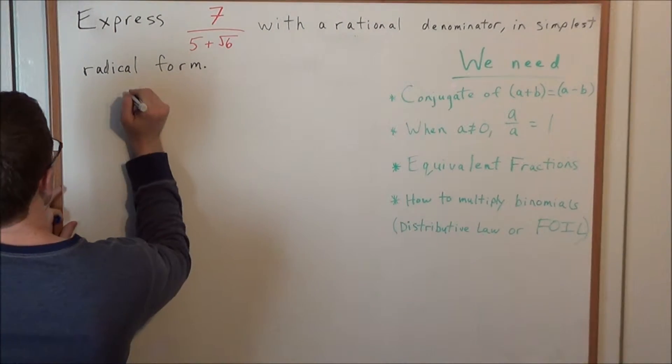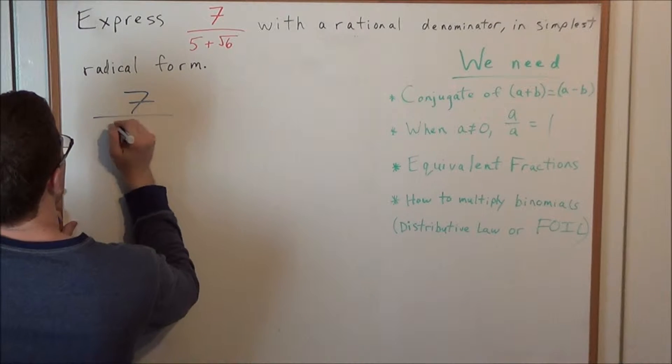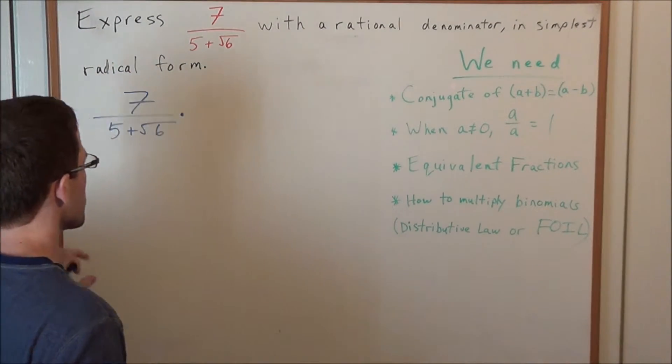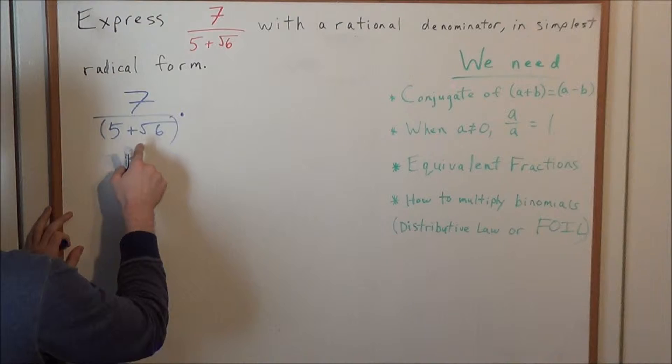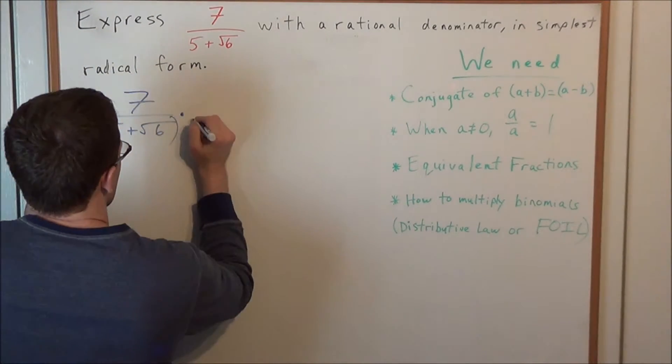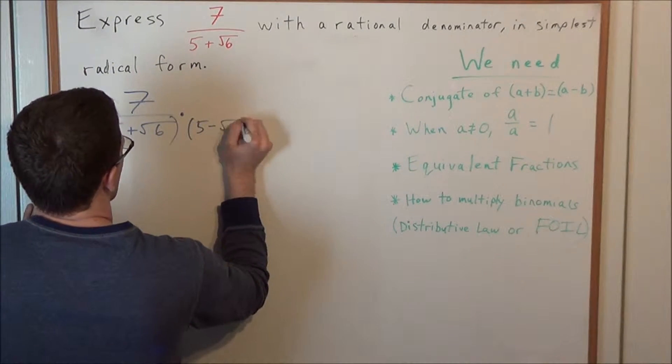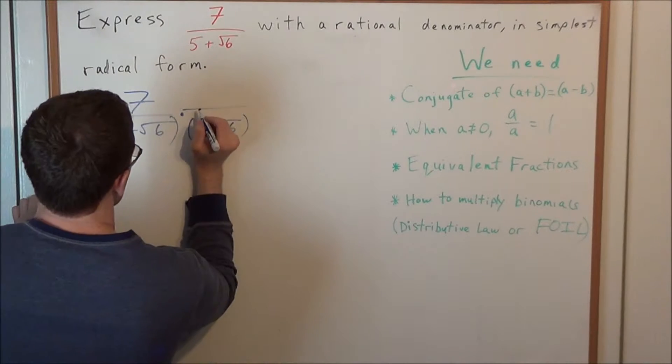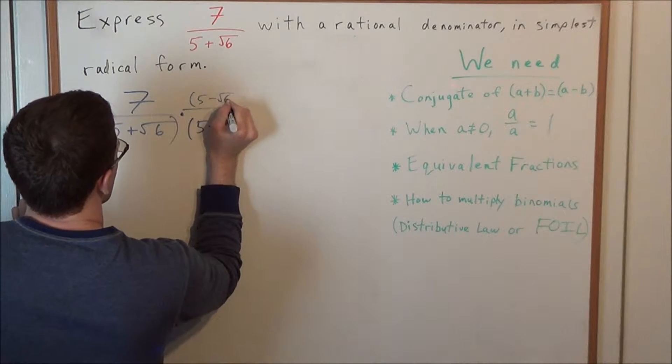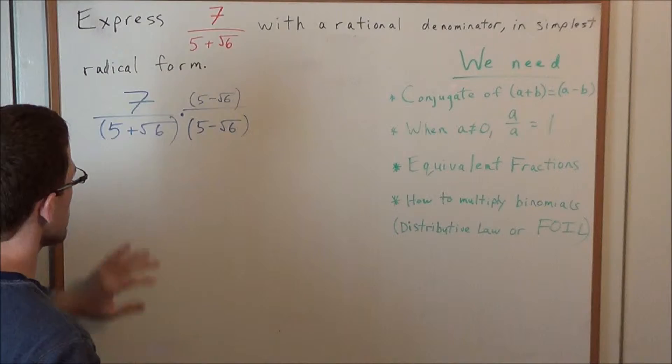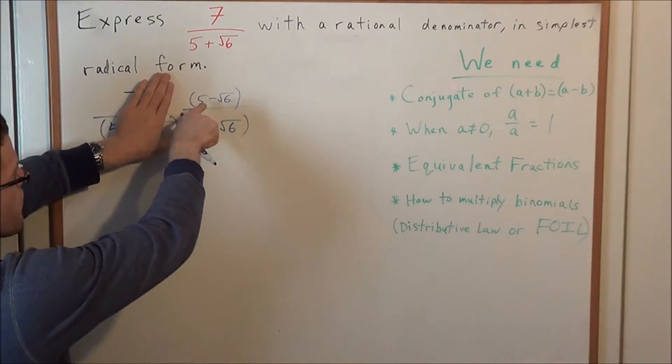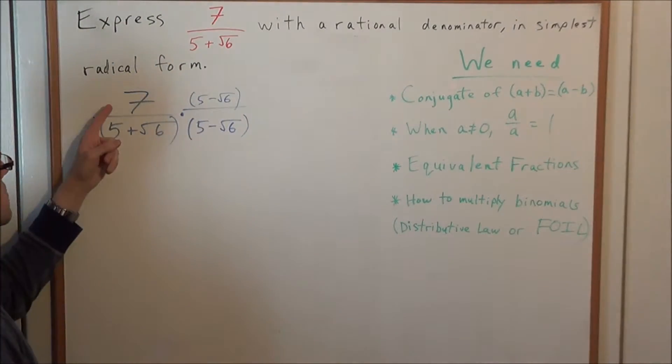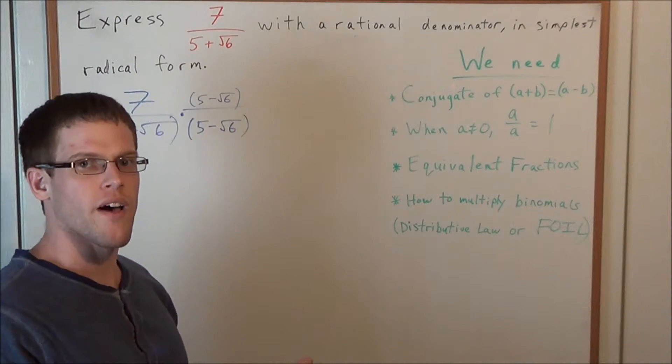We have 7 divided by 5 plus the square root of 6. We need to generate a rational denominator, so we're going to multiply 5 plus the square root of 6 by its conjugate 5 minus the square root of 6. But remember, we need to preserve the value of this fraction, so we also need to multiply the numerator by 5 minus the square root of 6. Notice how it's in this form here: we have 5 minus the square root of 6 divided by 5 minus the square root of 6. This is equal to 1, so we're multiplying this fraction by 1. We're not changing its value, only its representation.